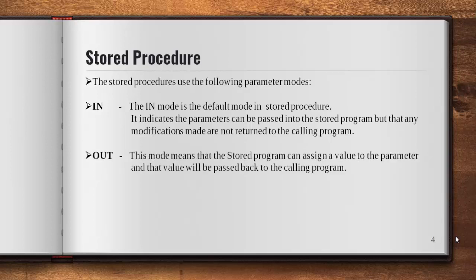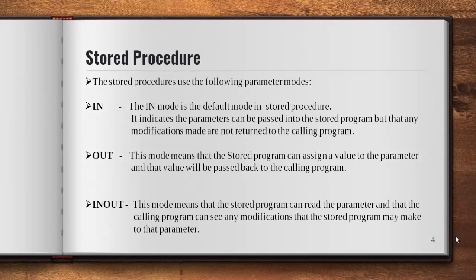The second mode is OUT, which is the opposite of IN. In OUT mode, whatever value you assign to the formal parameter will also change the actual parameter in the calling program. The third mode is IN OUT, which combines both — you use a single parameter that acts as both input and output together, written as IN OUT without any space.